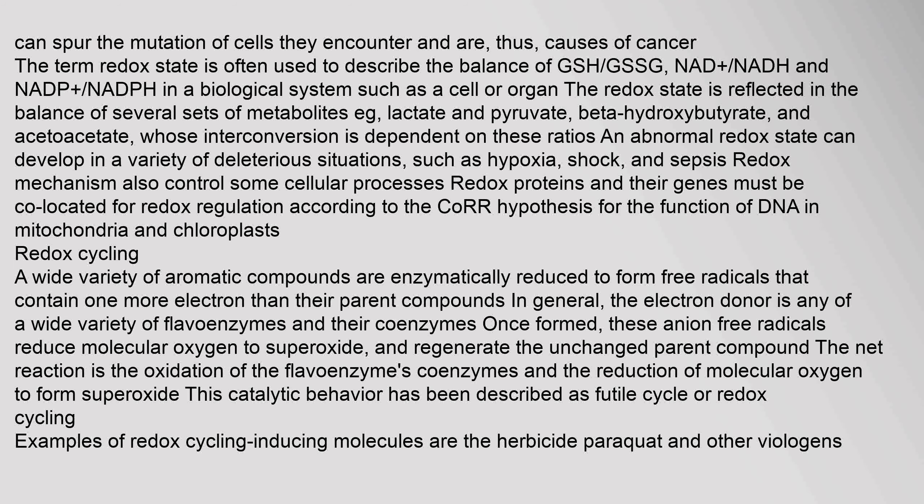A wide variety of aromatic compounds are enzymatically reduced to form free radicals that contain one more electron than their parent compounds. In general, the electron donor is any of a wide variety of flavoenzymes and their coenzymes. Once formed, these anion free radicals reduce molecular oxygen to superoxide and regenerate the unchanged parent compound. The net reaction is the oxidation of the flavoenzymes' coenzymes and the reduction of molecular oxygen to superoxide. This catalytic behavior has been described as a futile cycle or redox cycling. Examples of redox cycling-inducing molecules include the herbicide paraquat and quinones such as menadione.